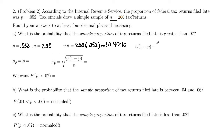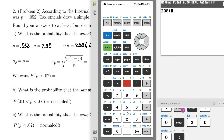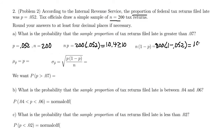And N times 1 minus P: 200 times 1 minus 0.052 equals 189.6, which is also greater than or equal to 10. As long as both of those products are greater than or equal to 10, that satisfies the requirements for a normal approximation. If either one is less than 10, then you can't use the normal approximation.